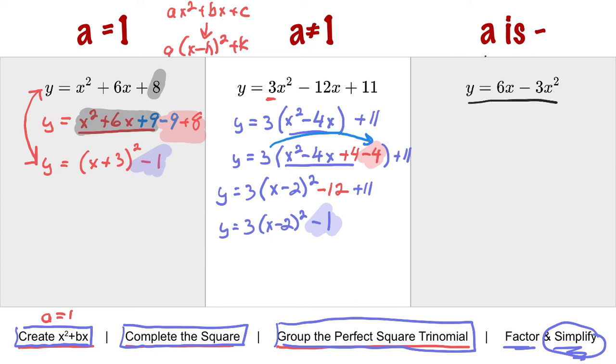a is negative. The first thing I want to do is put it in the correct order. So it's negative 3x squared plus 6x.